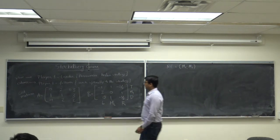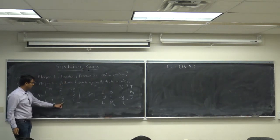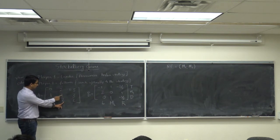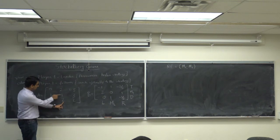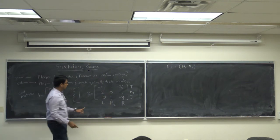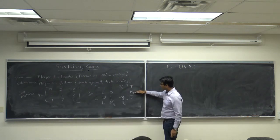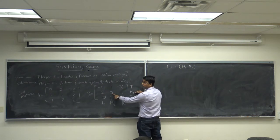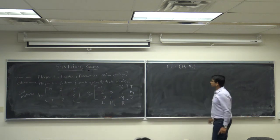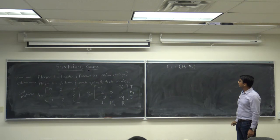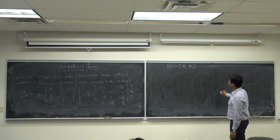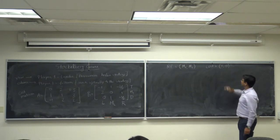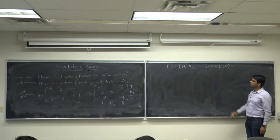If player two decides to play M2, then the best response for player one is M1. If player one picks M1, then the best response for player two is M2. So that is a Nash equilibrium. The cost is 1 for player one and 0 for player two.